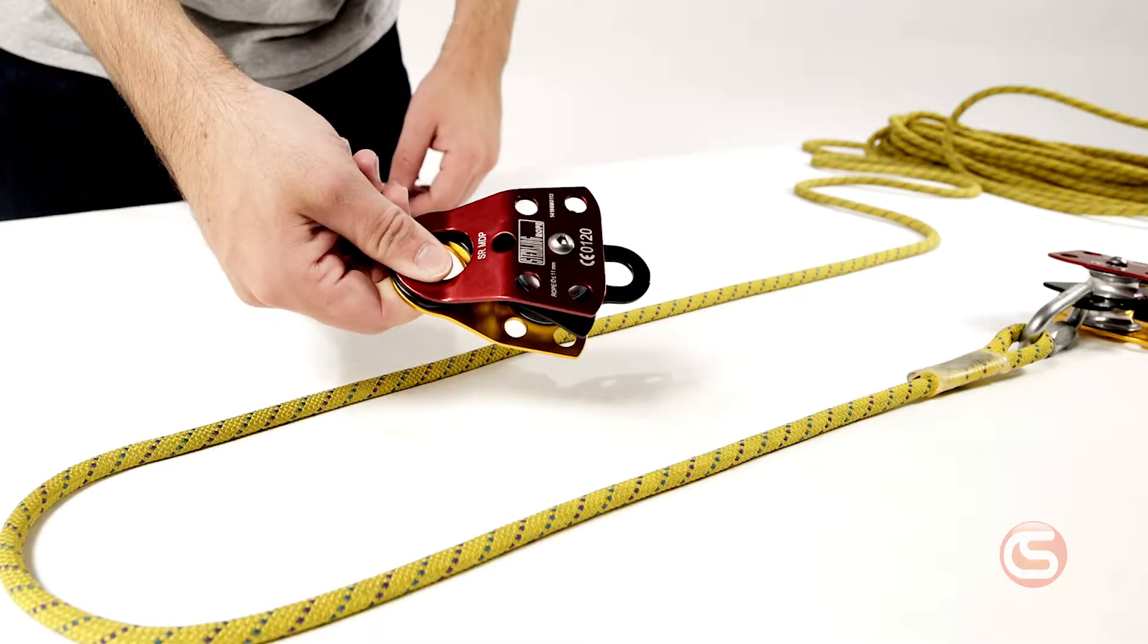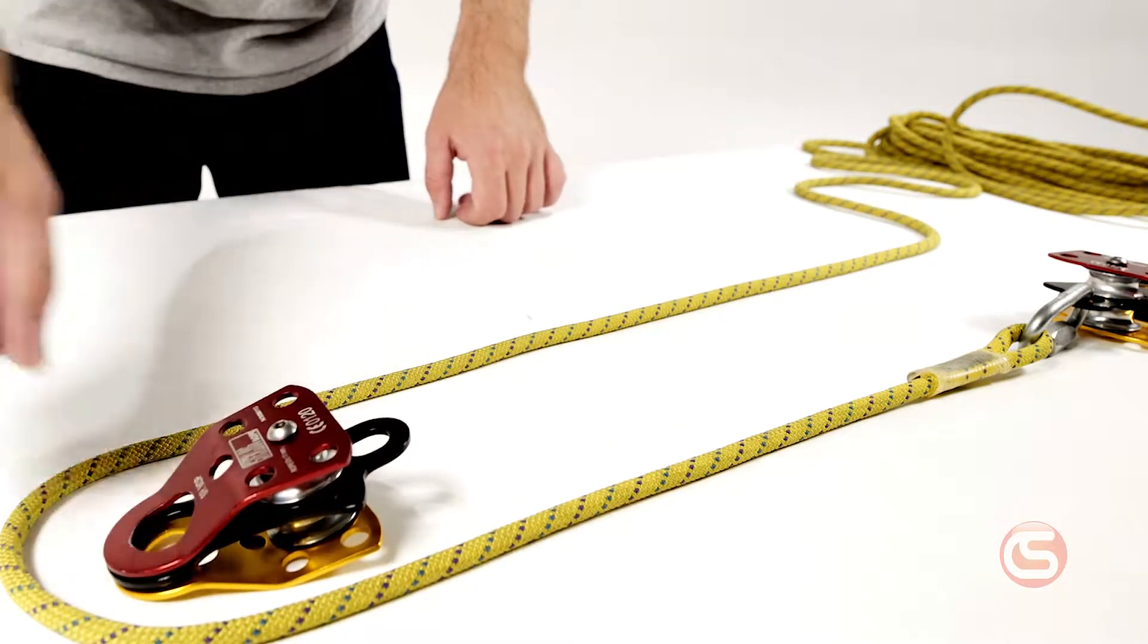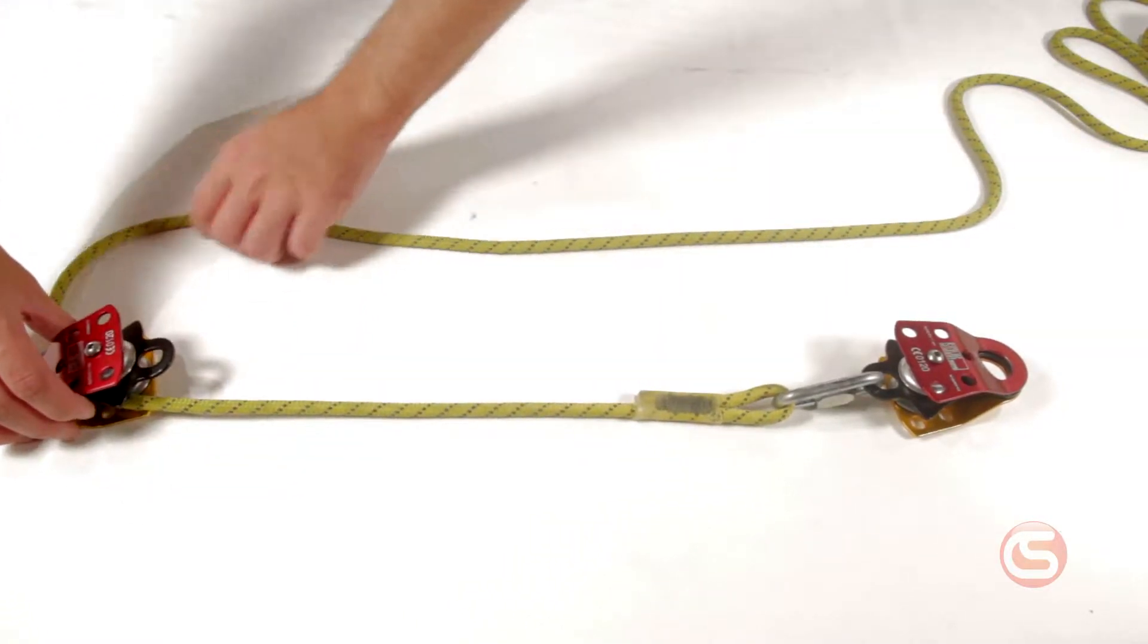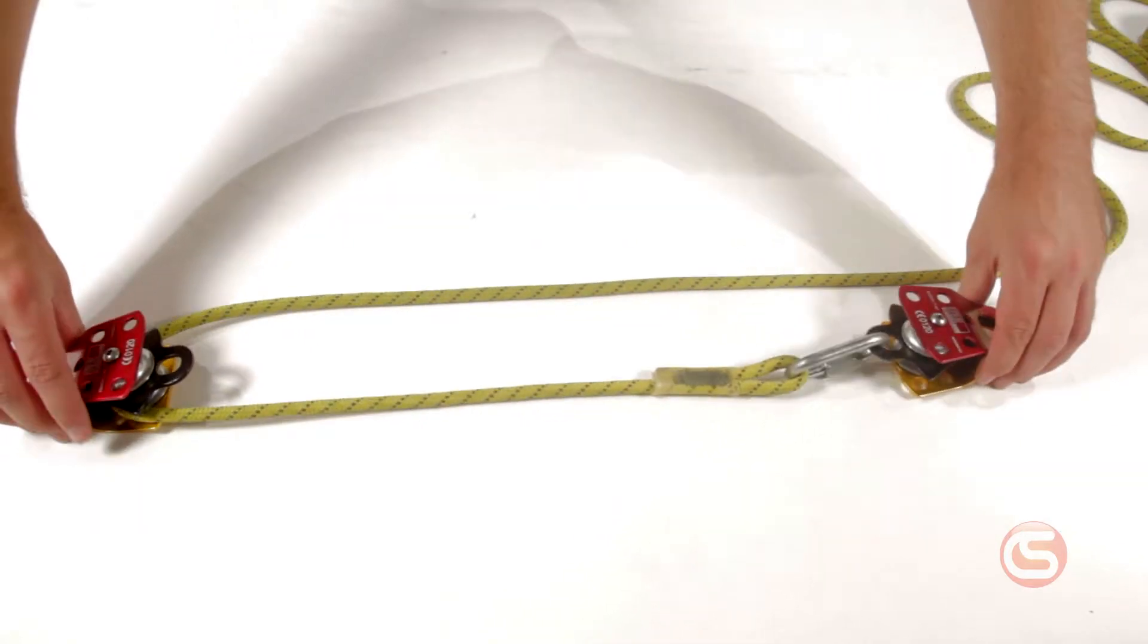Now let's take the other double-sheave pulley and position it here facing away from the first one. We'll start rigging it from the bottom, so open it up, run the first length of rope through, and once you're through, you can close that side of the pulley.